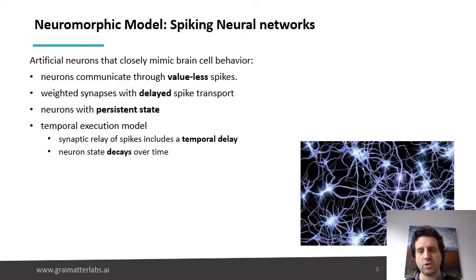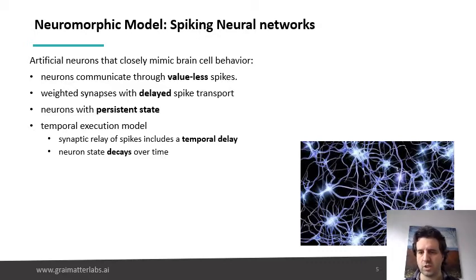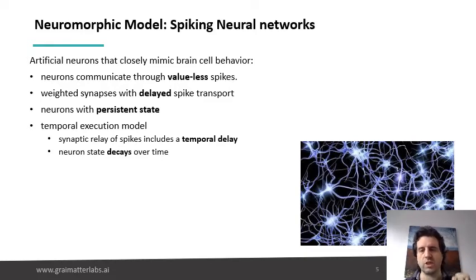So that means that all neurons in an actual spiking neural network model, they all have persistent state. Contrary to what we do normally in artificial neural networks, where you evaluate the output of a layer of neurons, pass it to the next one, and you can forget about what these neurons are doing.